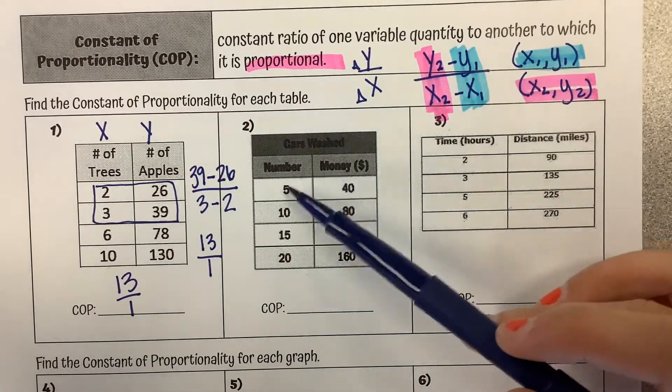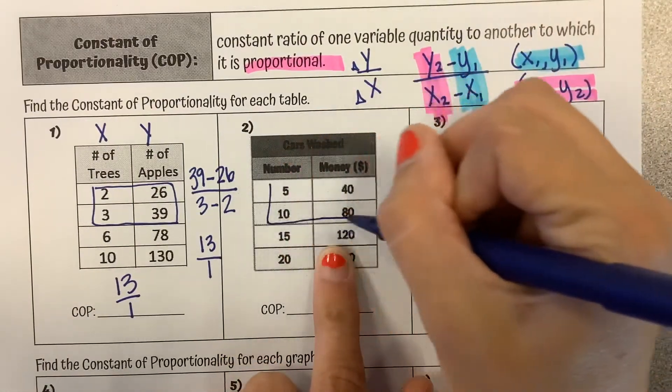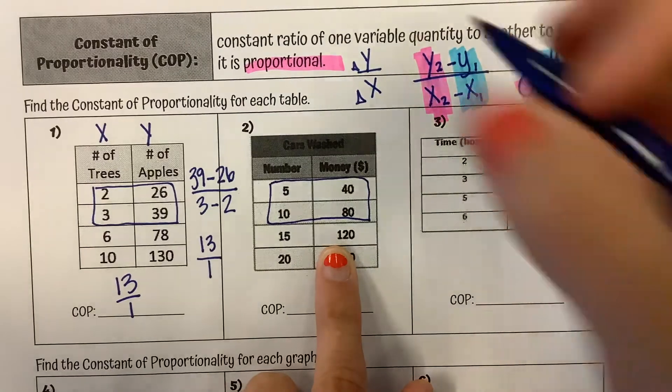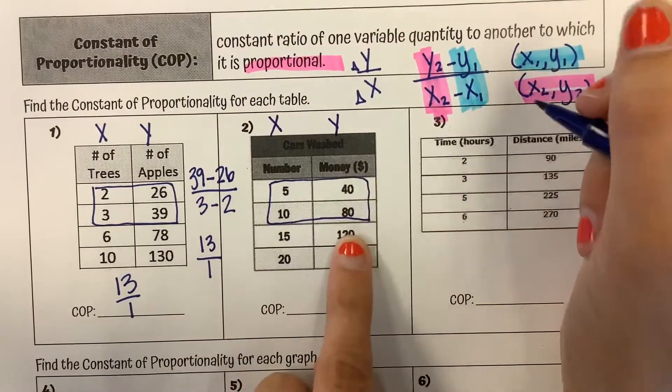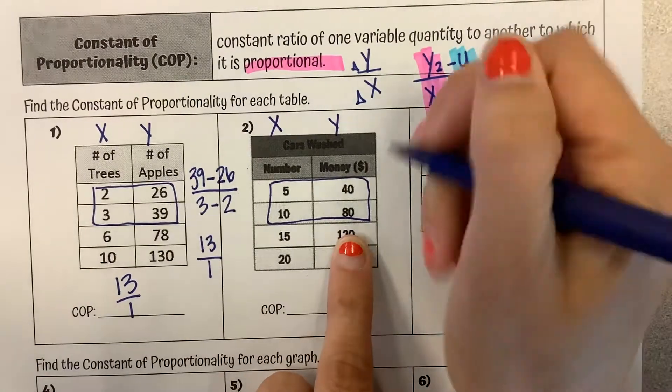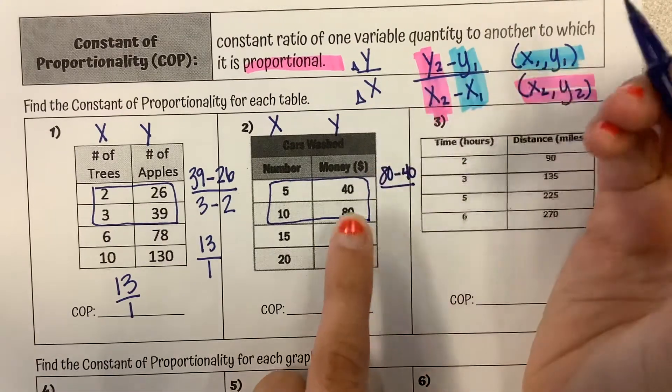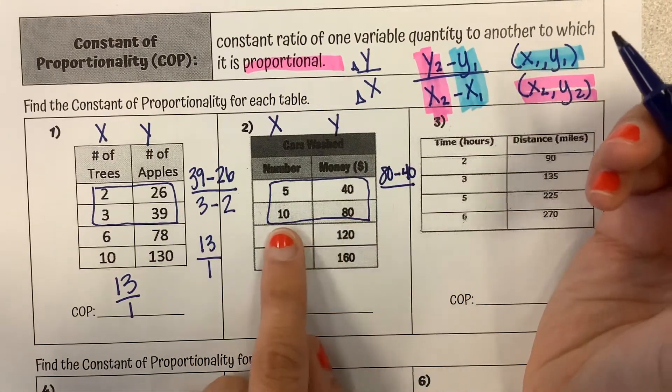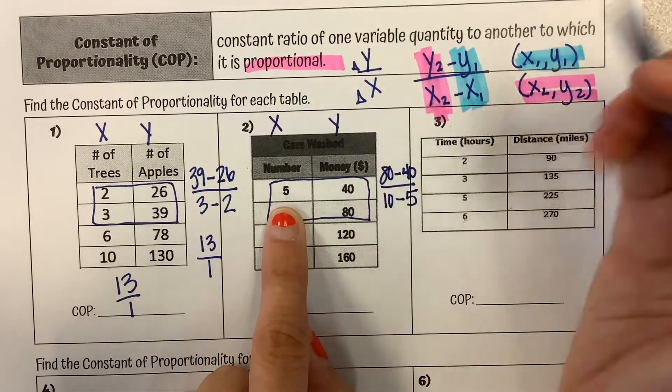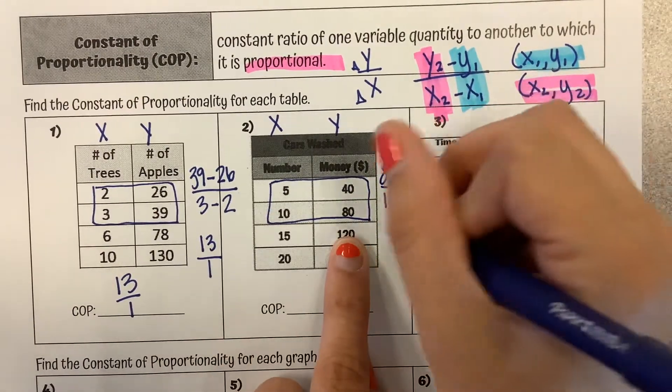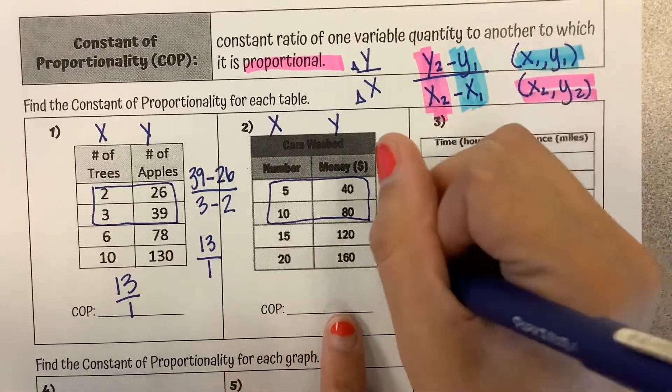Number two. I'm going to pick any two points, so I'm just going to pick these two right here, and same thing. x is on the left, y is on the right. So I'm going to start with my y's. I'm going to start with my bigger y. So I'm going to do 80 minus 40, over, since I started with 80 for my y, I'm going to start with 10 for my x, minus 5. So 80 minus 40 is 40. 10 minus 5 is 5.